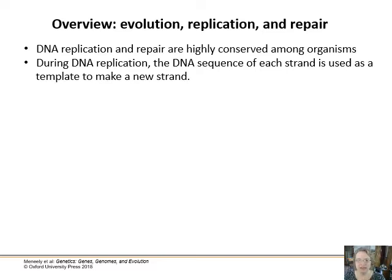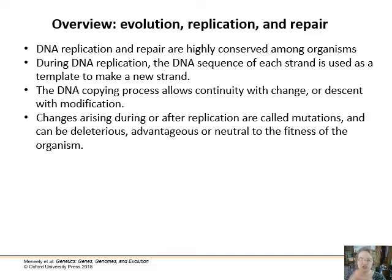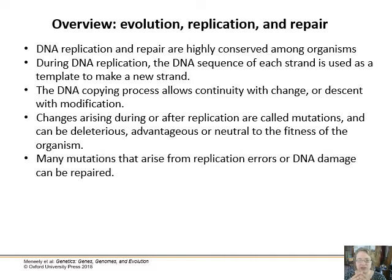During DNA replication, the DNA sequence of each strand is used as a template to make a new strand, also called semi-conservative replication. This copying process allows for continuity, but mutations can happen and can be passed along during the replication process. These changes arising either during or after replication are called mutations — any change to the DNA. They could be deleterious, advantageous, or neutral in terms of how they affect the organism.